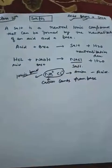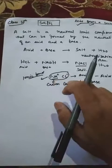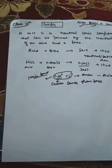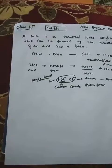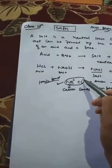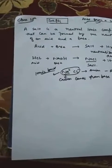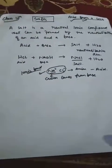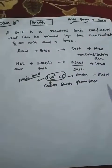In salt, an ionic bond is present. This means there is a transfer of electrons — sodium gives its electron to chlorine. There is complete transfer of electrons, and mutual attraction between positive and negative ions, between cation and anion. So this is called an ionic bond, as we have already studied. Salt is a neutral ionic compound.